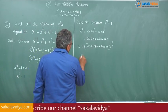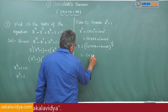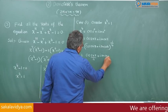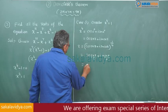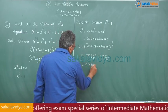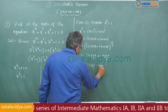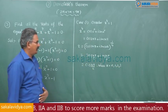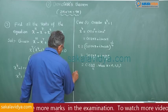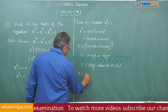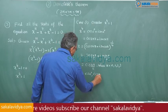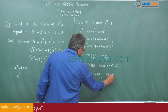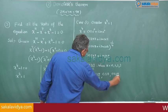Applying de Moivre's theorem, this equals cos(2kπ/4) plus i sin(2kπ/4), which can be written as cis(kπ/2), where k is equal to 0, 1, 2, 3. Therefore, x is equal to cis 0, cis π/2, cis π, cis 3π/2 — these are the four roots.